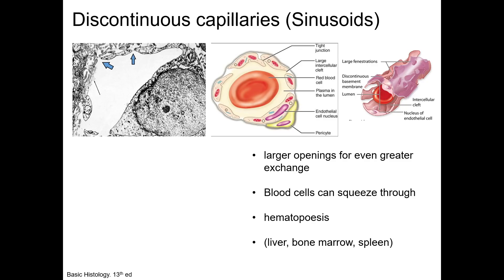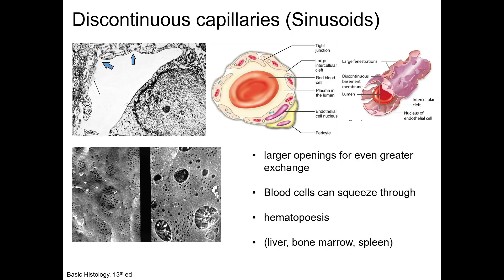The third and final type of capillary is the discontinuous capillary, or the sinusoid. These vessels have an incomplete endothelial lining and incomplete basal lamina, and this allows for large gaps that promote even greater exchange. You can see these gaps at the blue arrows in this electron micrograph. In this scanning electron micrograph, you can appreciate the very large size of these sinusoids. Discontinuous capillaries or sinusoids are found where there needs to be an intimate relationship between blood and parenchymal cells, for example, in the liver and the spleen.